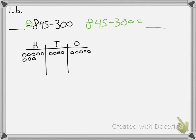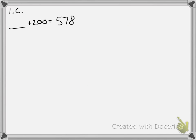I've put 845 on my place value chart and now I start subtracting. I don't subtract anything in the ones place, so I end up with 5. I don't subtract anything in the tens place either, so I end up with 4. In the hundreds place I'm only subtracting 3, and I end up with 545.